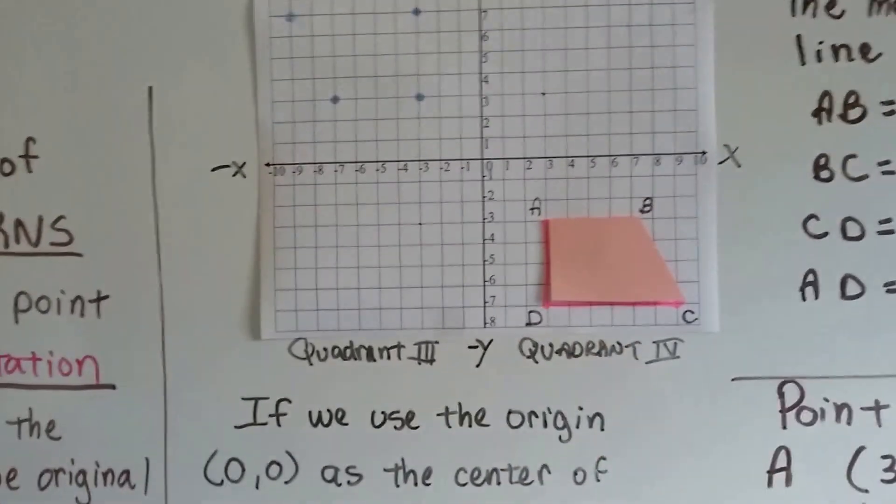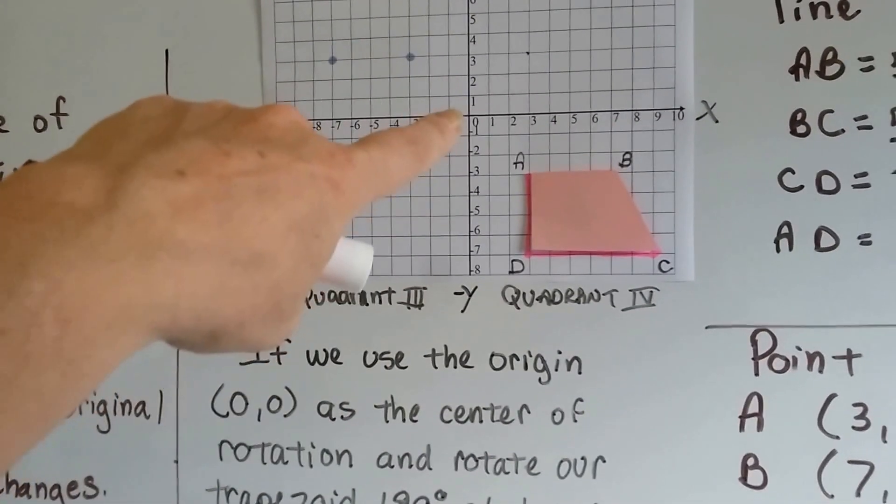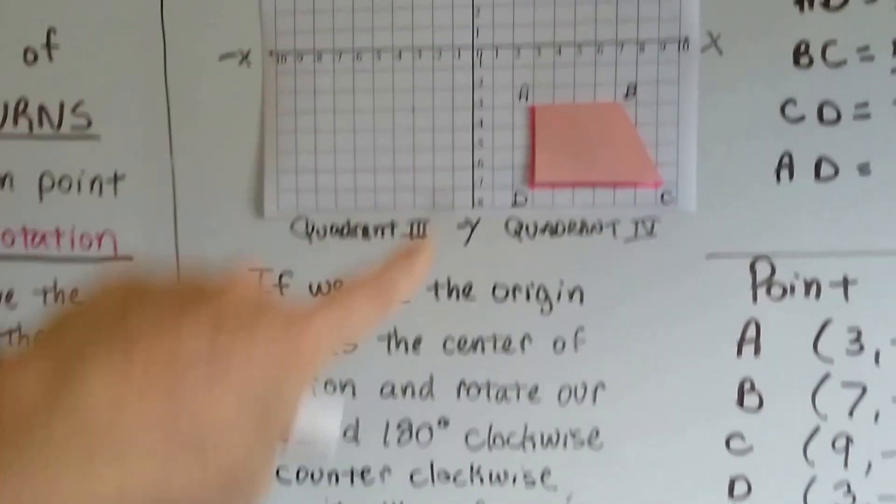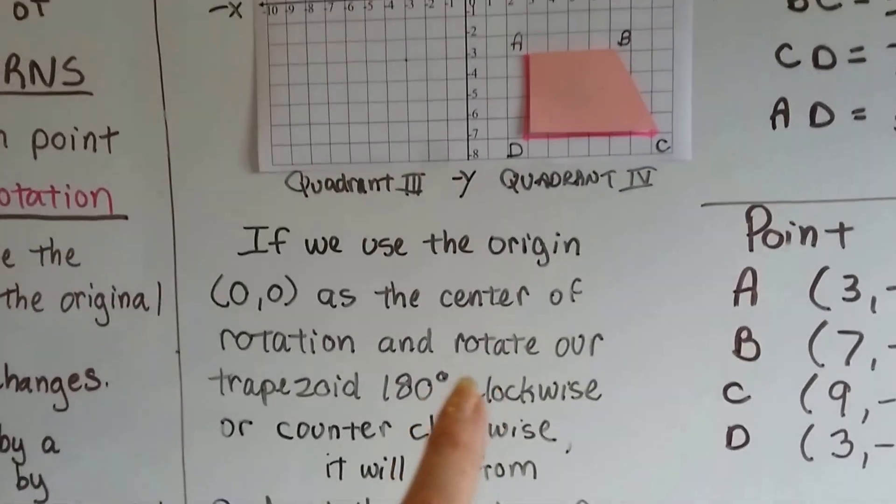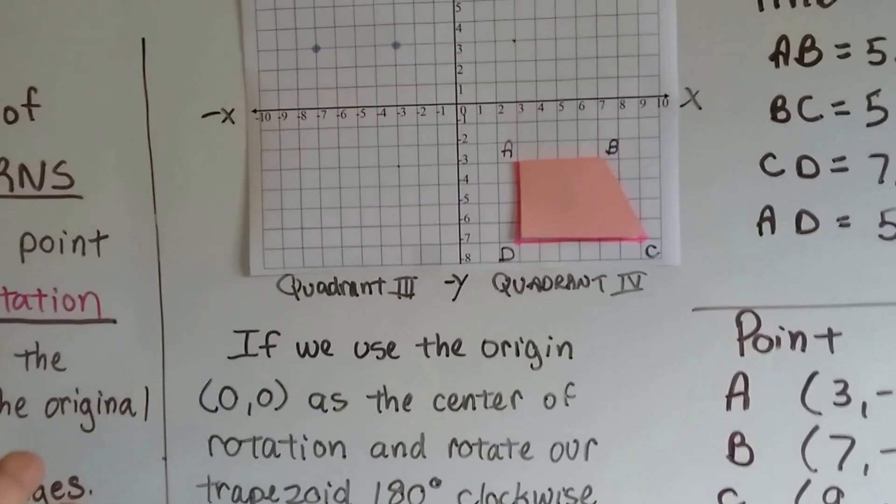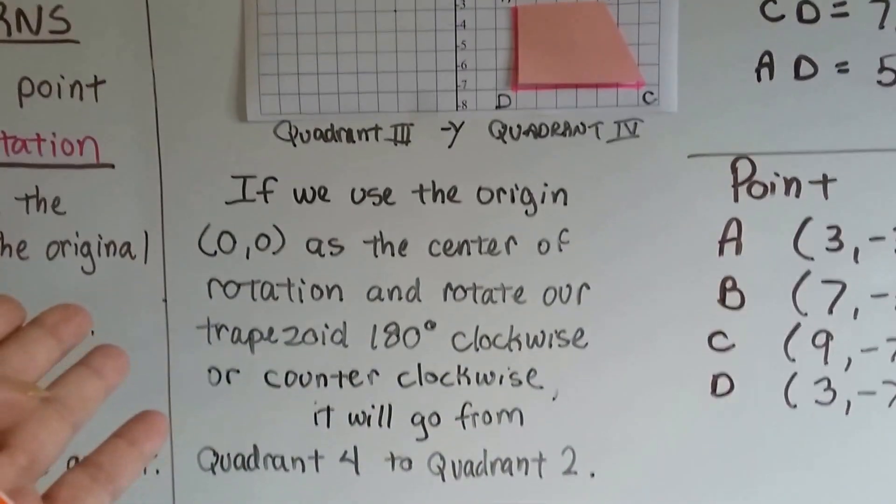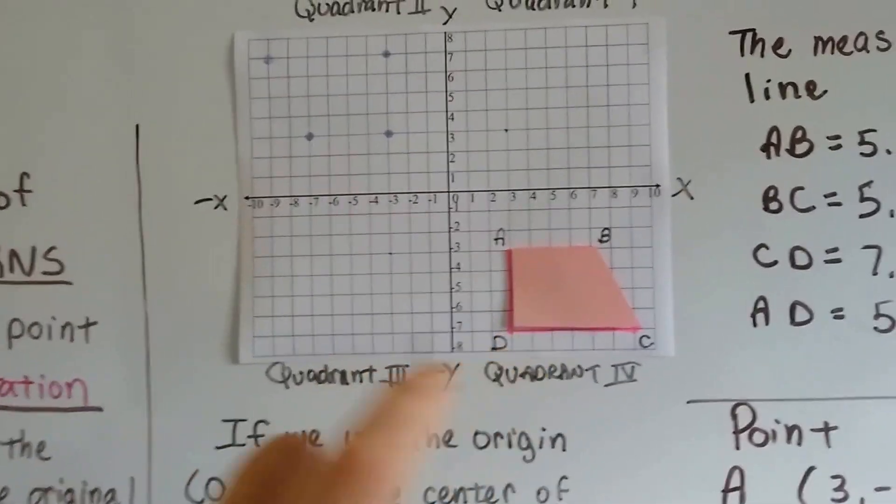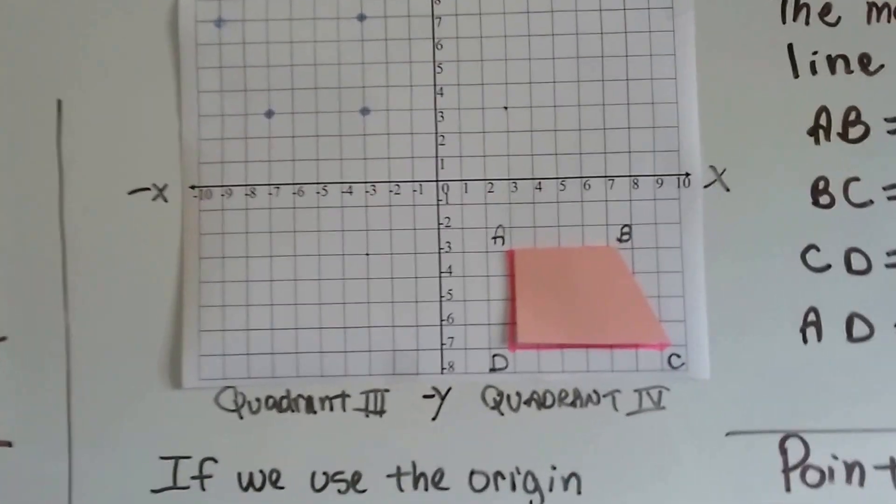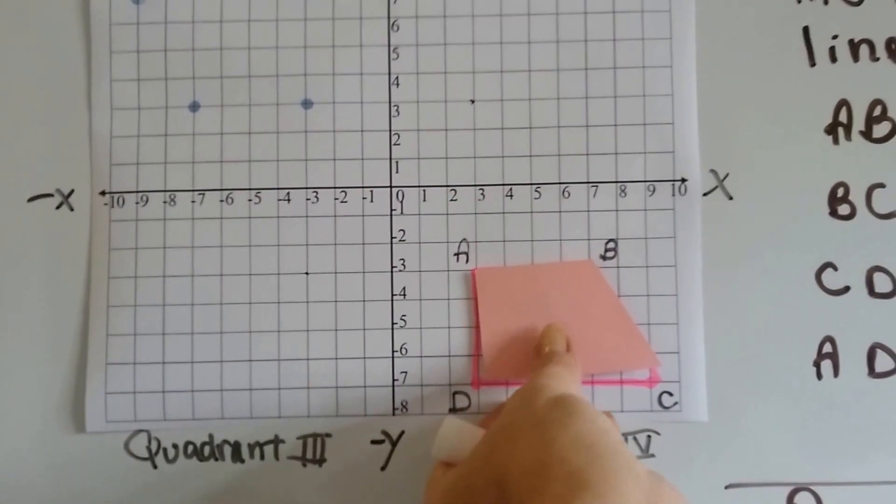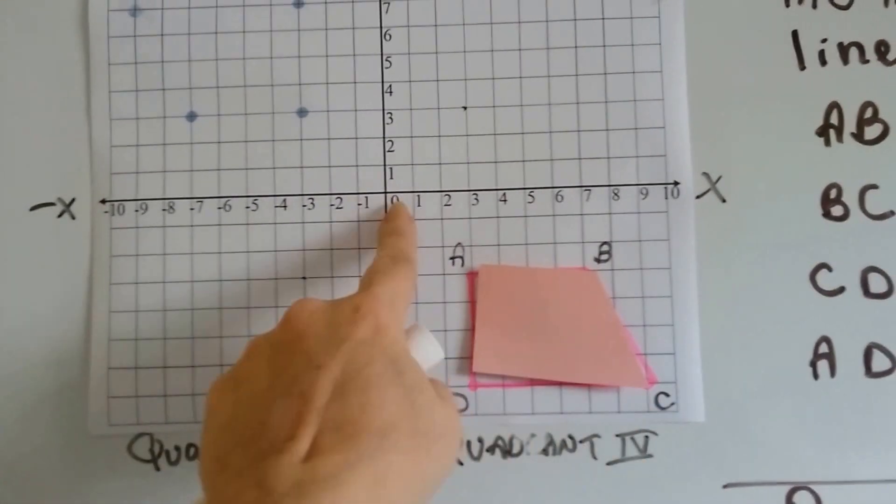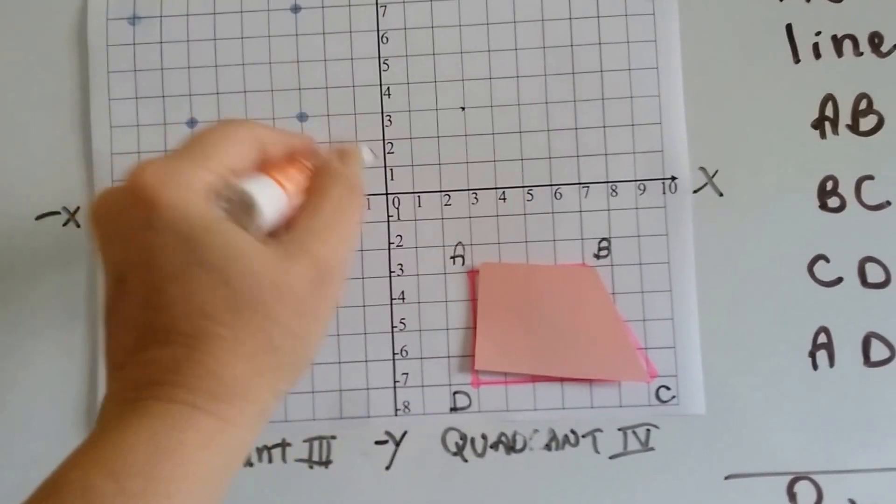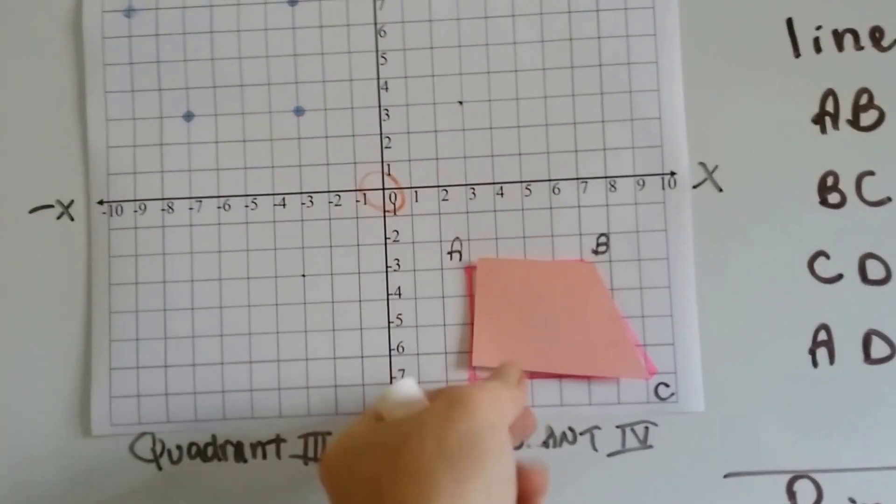So we've got this trapezoid, and we're going to use the origin (0,0) as the center of rotation and rotate our trapezoid 180 degrees clockwise. We could turn it counterclockwise, it wouldn't matter. It's going to go from quadrant 4 to quadrant 2. We're turning it 90 degrees, and this is the center of rotation right here.